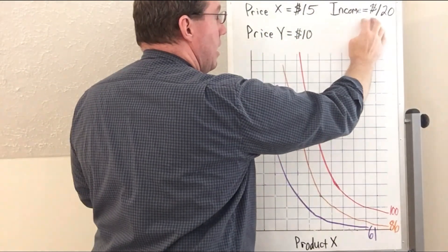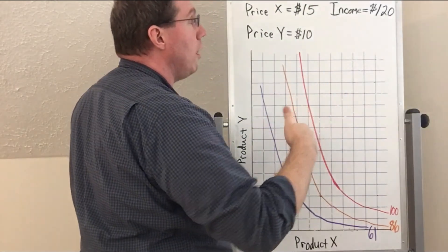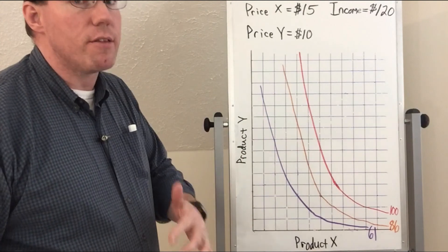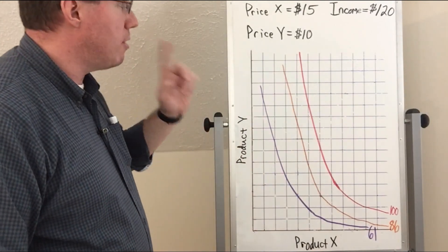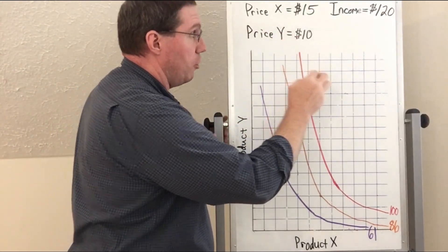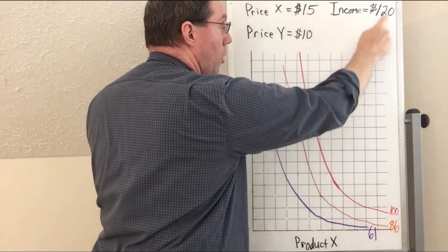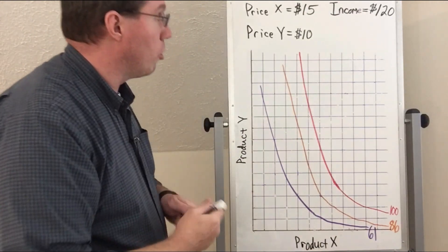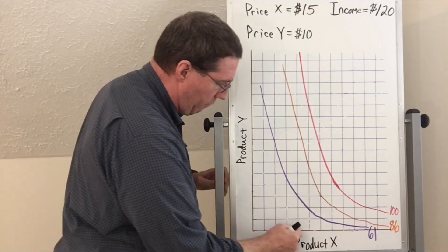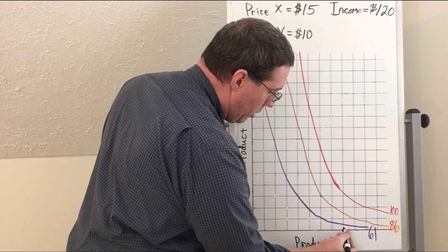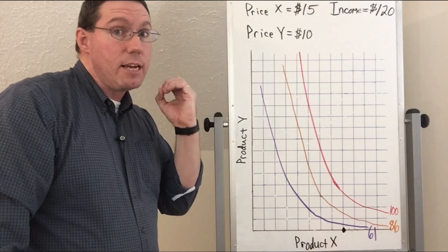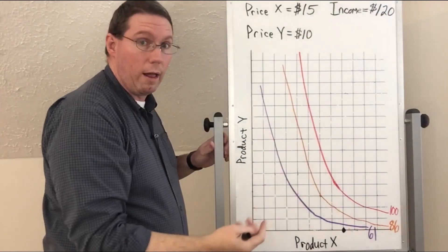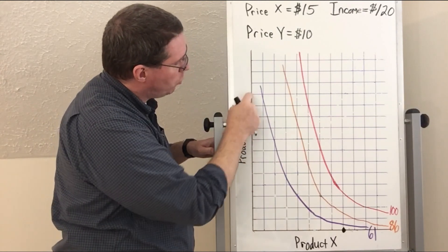We need to find how many of X and how many of Y they could buy. We divide income by the price of X: $120 divided by $15 equals 8. So we go to a quantity of 8 along the X-axis and put a dot — they could purchase 8 of X and 0 of Y. We also divide income by the price of Y: 120 divided by 10 is 12. So we put a dot at 12 on the Y-axis — this person could purchase 12 units of Y and 0 units of X.